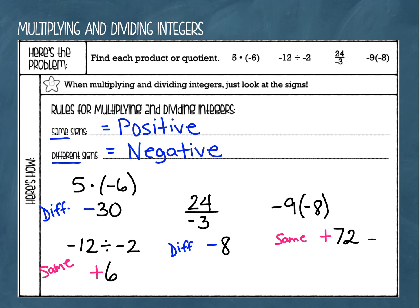So to recap: you're only going to look at your signs, and that's going to tell you whether the answer is positive or negative. If the signs are the same, we're going to have a positive answer. And if the signs are different, we're going to have a negative answer. So positive 5 times negative 6 is going to give us negative 30, because those signs are different.